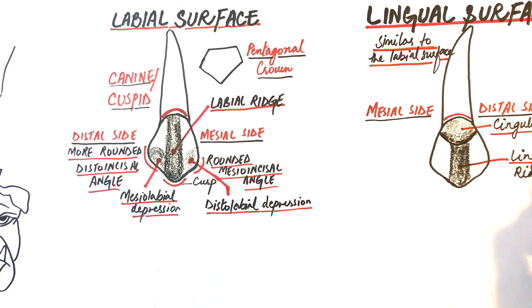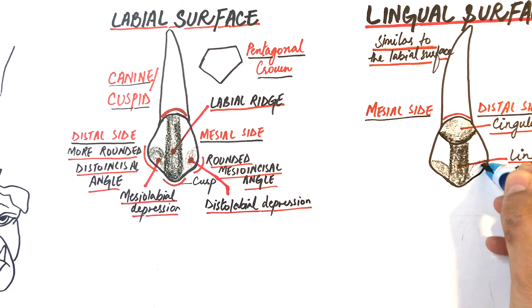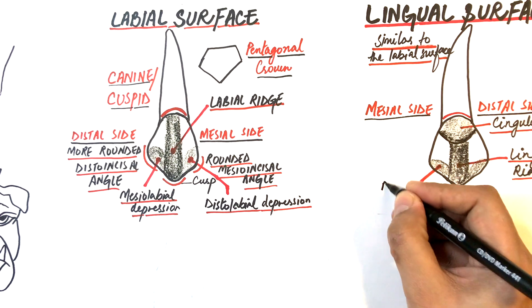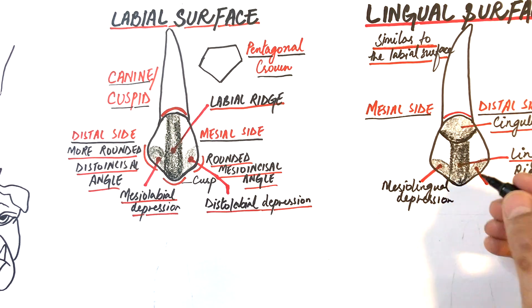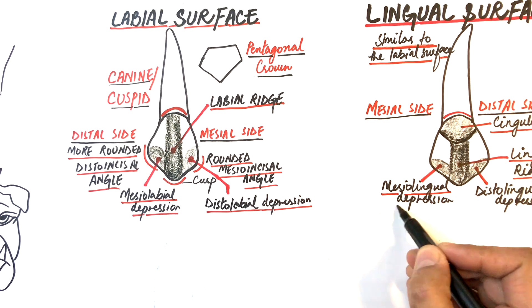Between the lingual ridge and the mesial and distal marginal ridges are shallow depressions just like the depressions present on the labial surface. These depressions here in this lingual surface are called the mesolingual and the distolingual depressions.